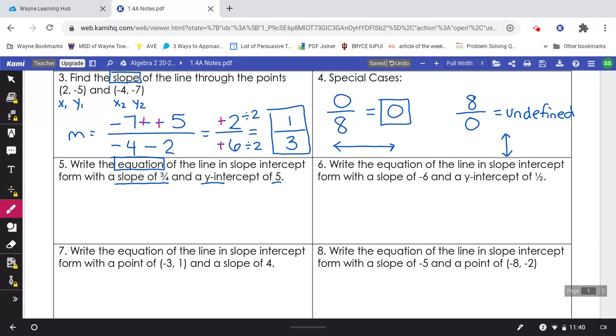For this one, all we are doing is just writing it directly into slope intercept form. Because you have the slope and the intercept, there is no need to do any math. All you have to do is put the 3 fourths in for m and the 5 in for the letter b. That's it. There is my final answer.